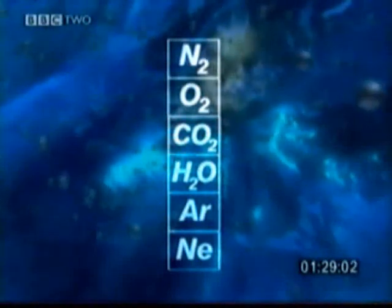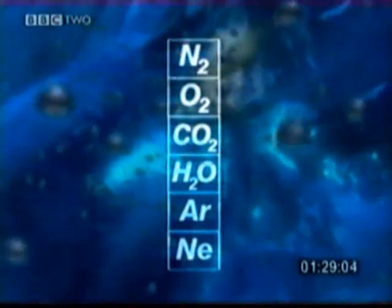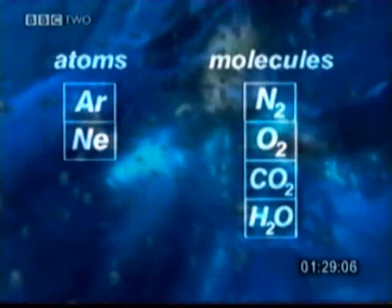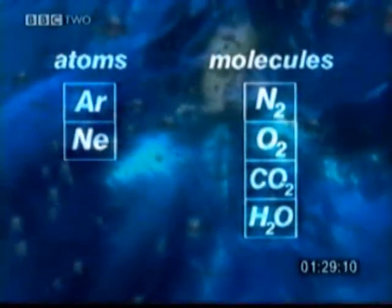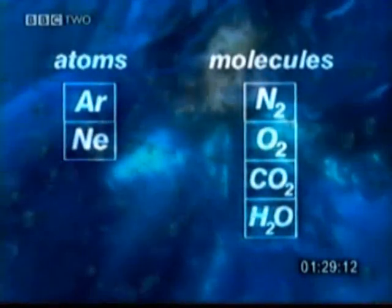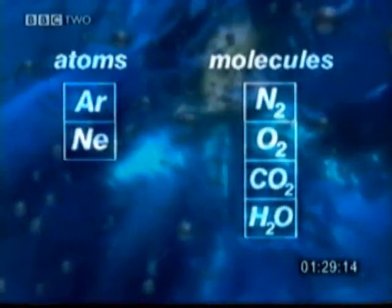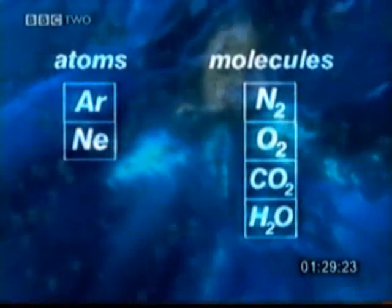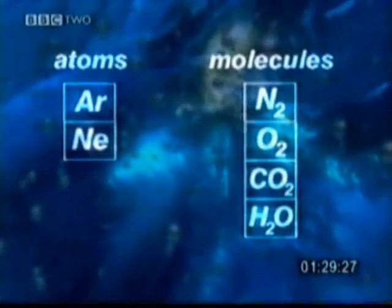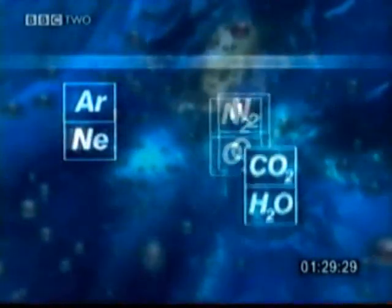All these different gases can be classified as atoms or molecules. Argon and neon on the left exist as single atoms, whilst the other gases are molecules of more than one atom. But these atoms and molecules, as we've seen, can also be classified as elements and compounds.